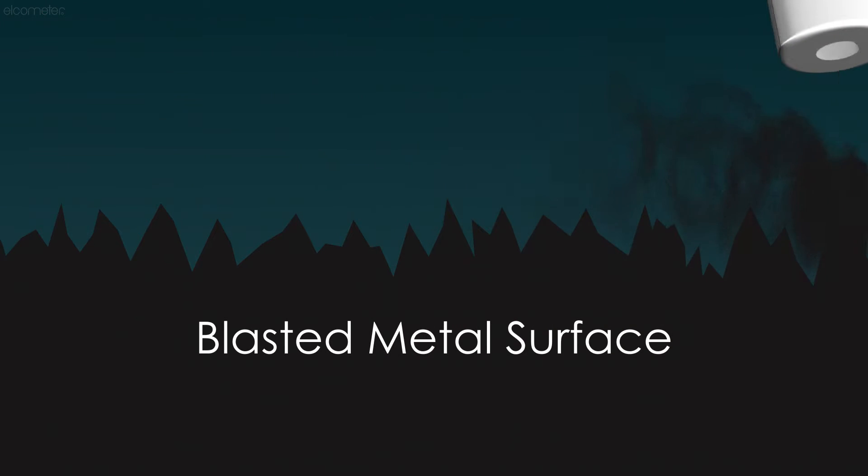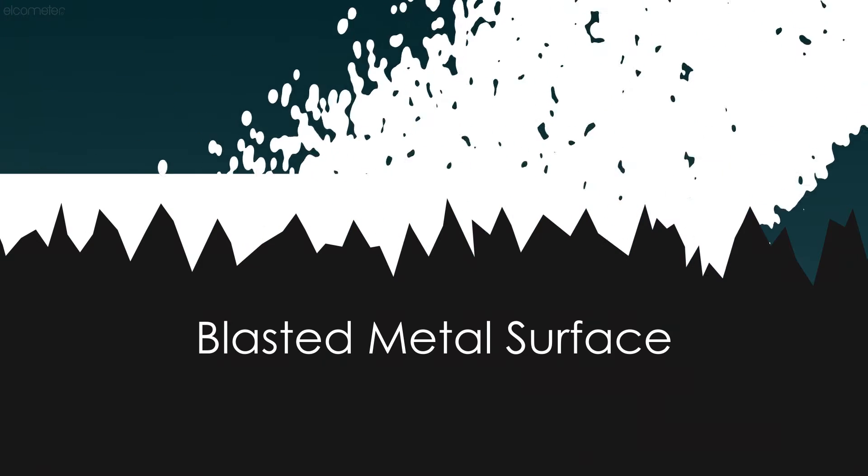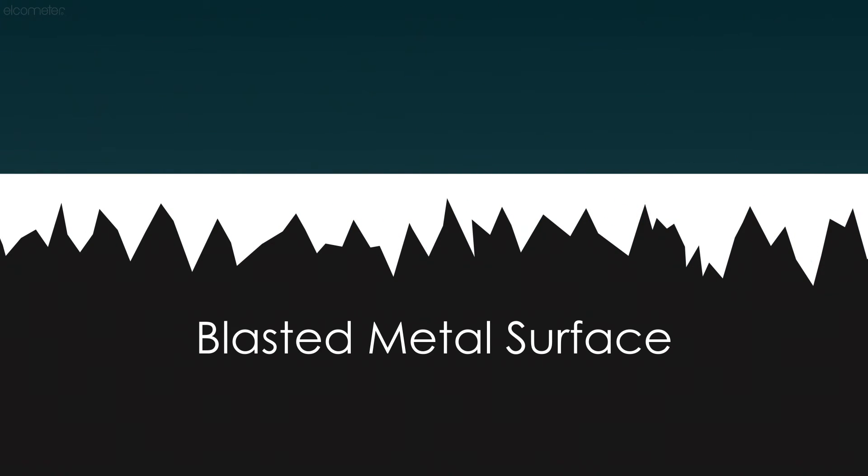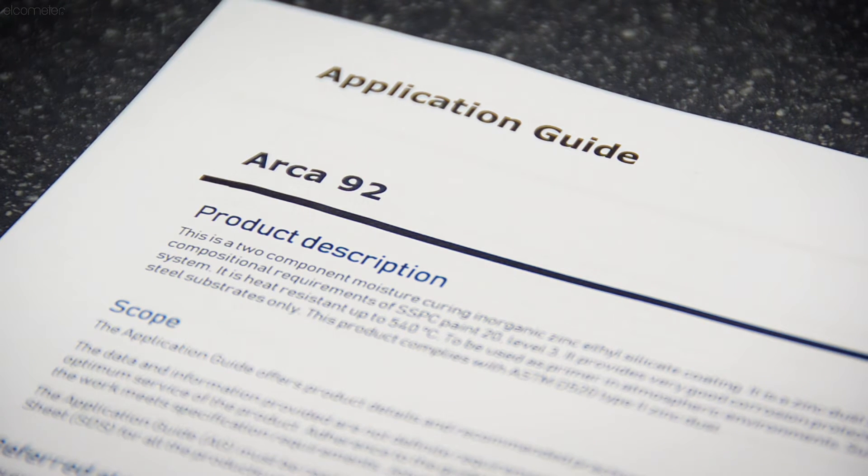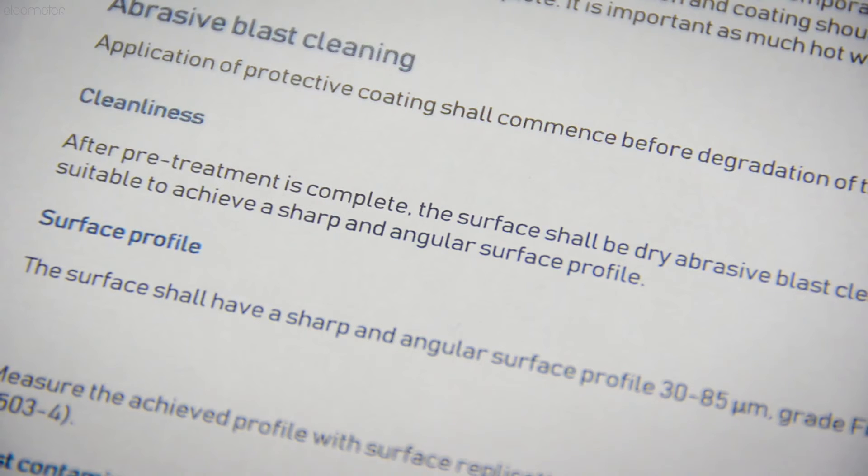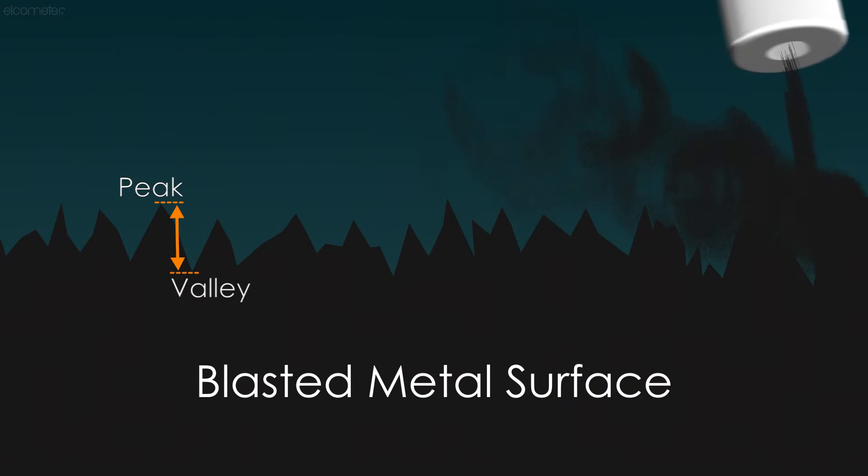The surface profile increases the surface area, which provides a key for the coating to adhere or stick to. The required surface profile is specified by the coating manufacturer or the coating specification agreed to by all parties, and is typically specified as a peak to valley height in either mils or microns.